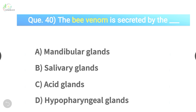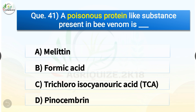Question number forty-one: A poisonous protein-like substance present in bee venom is which of the following? The options are: melittin, formic acid, trichloroisocyanuric acid, or pinocembrin. The correct answer is option A — melittin. A poisonous protein-like substance present in bee venom is melittin.